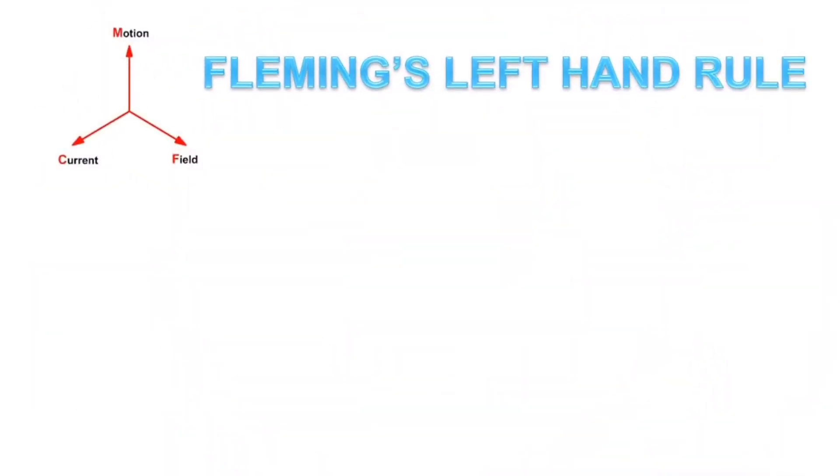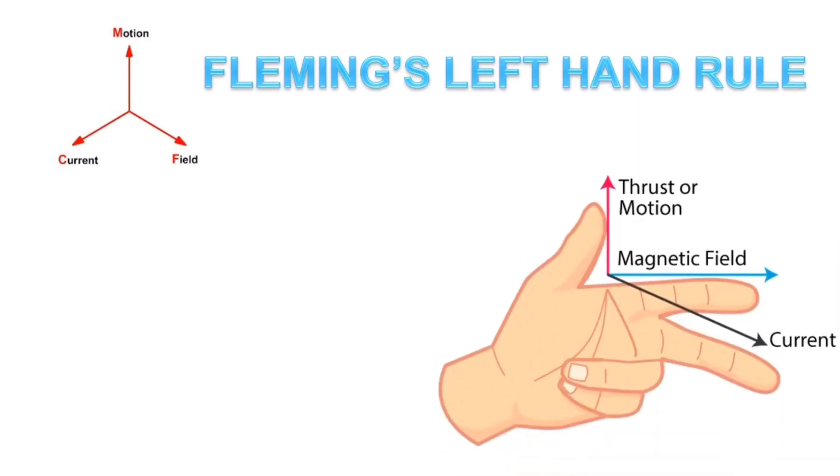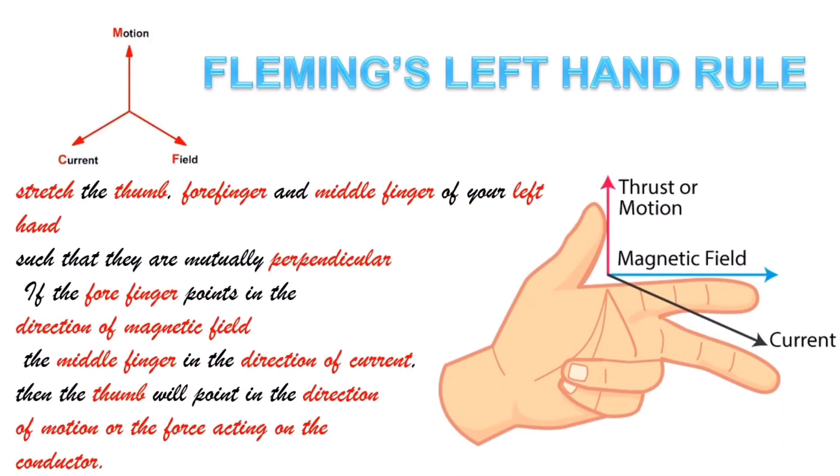This rule is named Fleming's left hand rule. Stretch the thumb, forefinger, and middle finger of your left hand such that they are mutually perpendicular to each other. If the forefinger points in the direction of the magnetic field, the middle finger in the direction of the current, then the thumb will point in the direction of motion or force acting on the conductor.